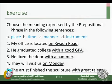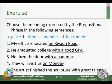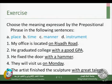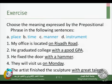Number two: 'He graduated college with a good GPA.' 'With a good GPA' is manner — the way in which he graduated. The answer is C. Number three: 'He fixed the door with a hammer.' Although both two and three use the same preposition 'with,' here 'with a hammer' expresses instrument — the tool used to fix the door. The answer is D. Number four: 'They will visit us on Monday.' 'On Monday' expresses time. The answer is B.